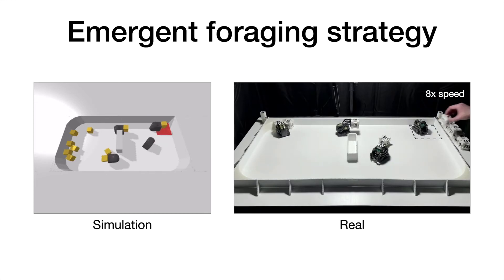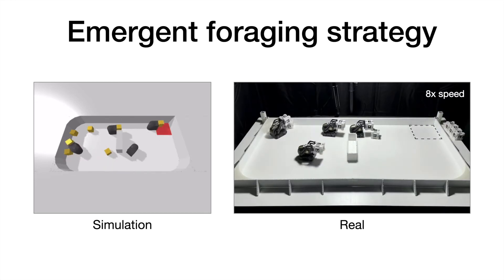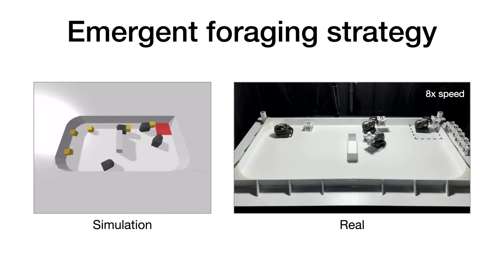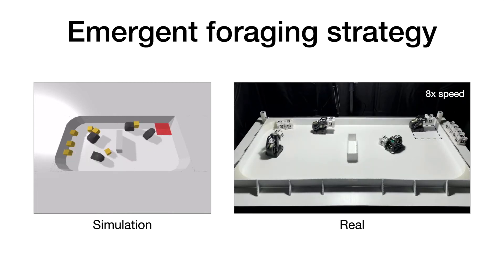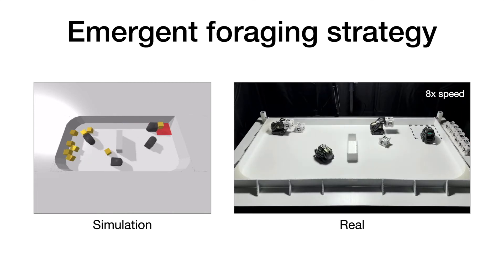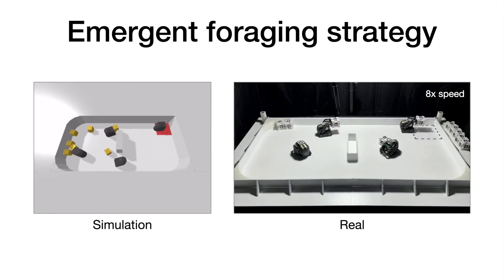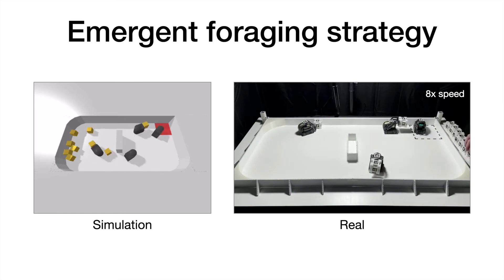Here we highlight an interesting emergent strategy in a small divider environment. We observe that the robots learn to move single file in a circle around the center divider. This strategy automatically emerges through training and turns out to be a very effective and efficient strategy for this environment.